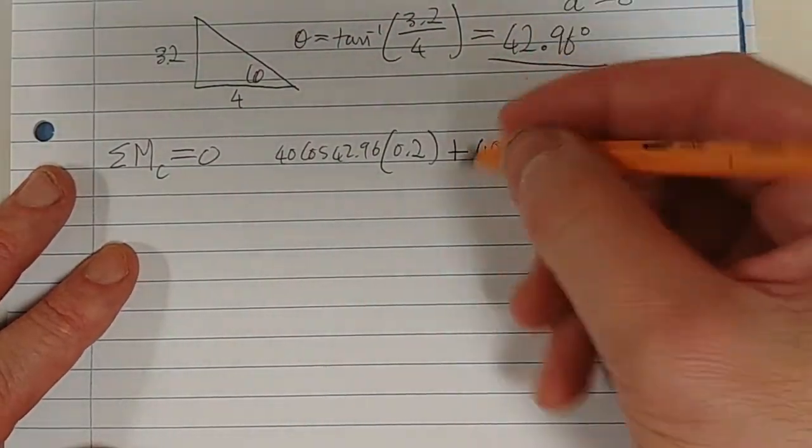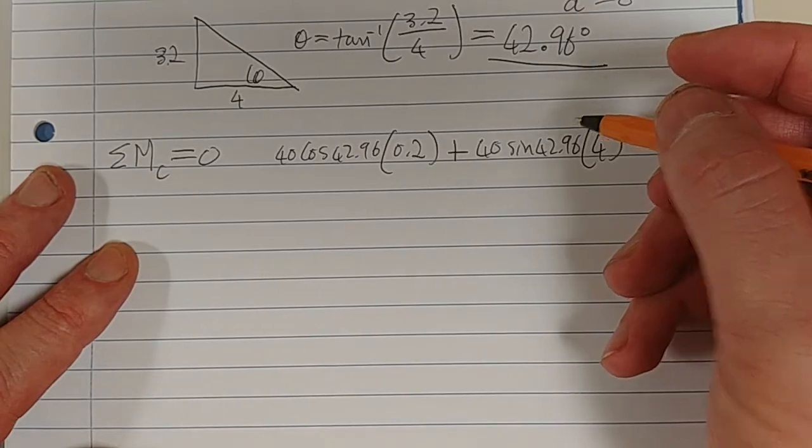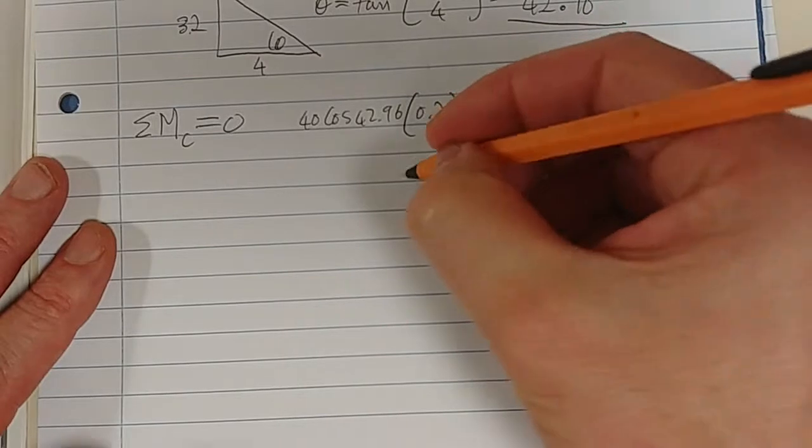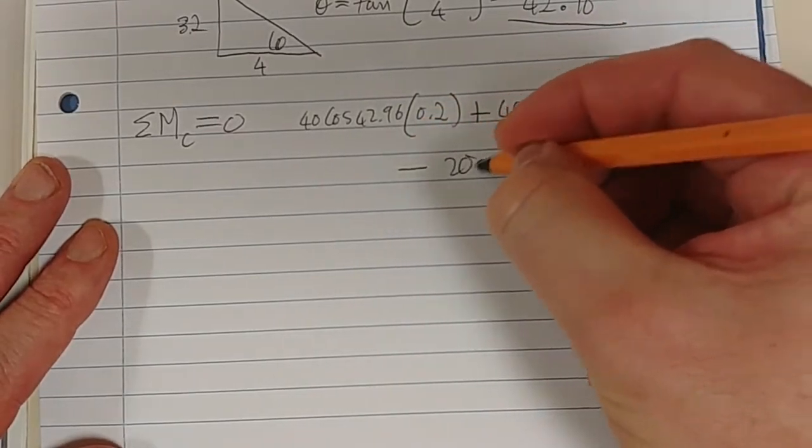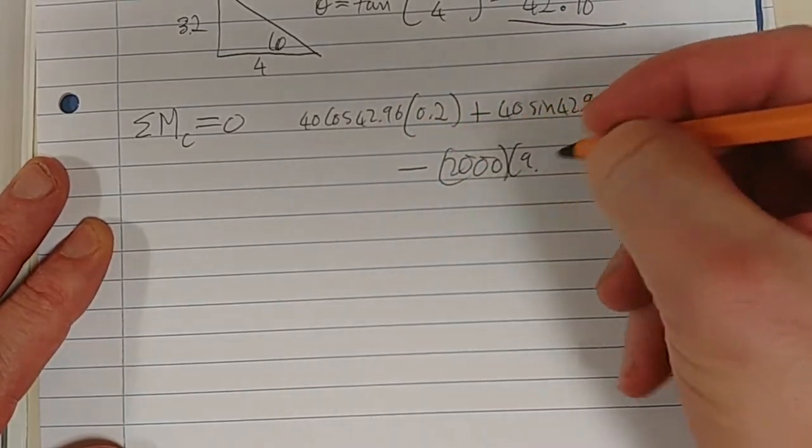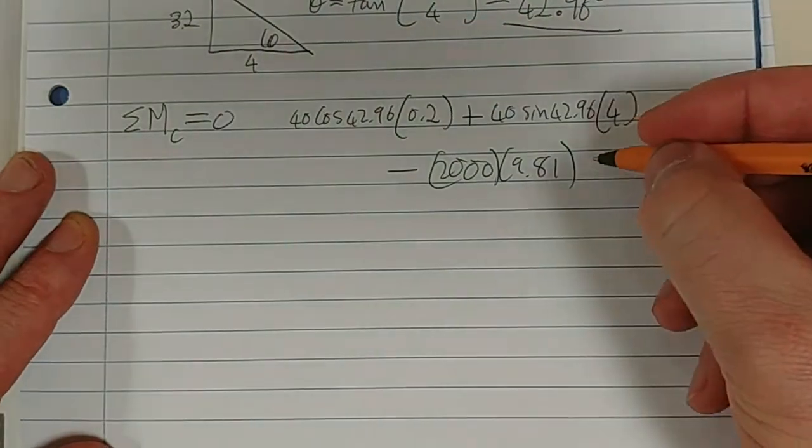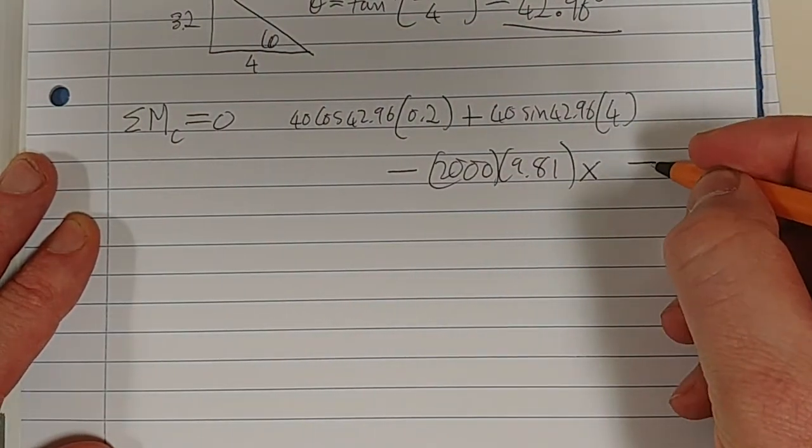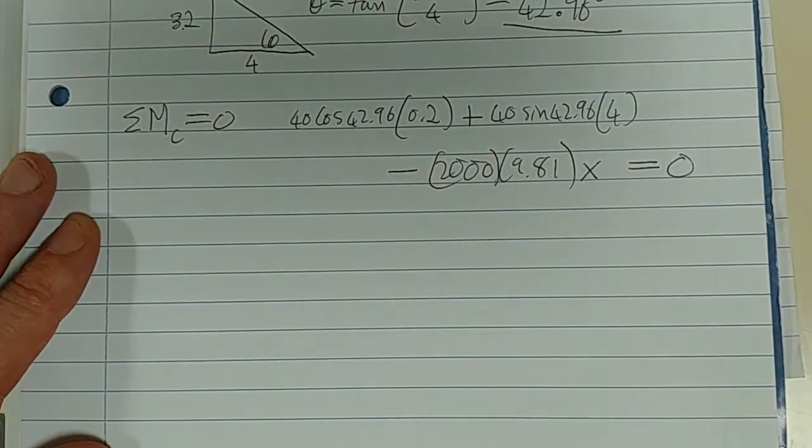So we've got this weight, but we know that the weight is causing a clockwise moment. So it's minus 2,000 times 9.81. And the moment arm is X. And that equals 0. All right.